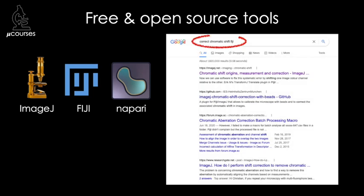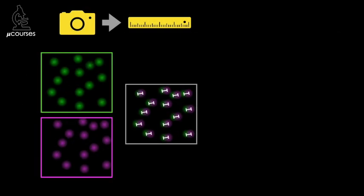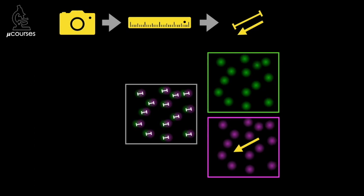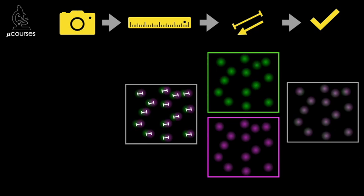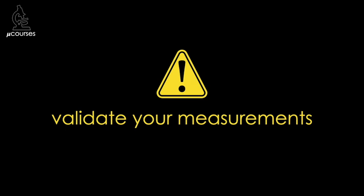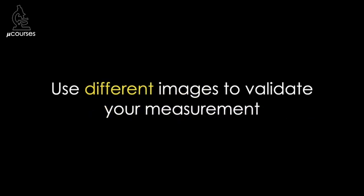Instructions on how to use these software are easy to find online, and if you have questions, you can ask the image analysis experts on the image.sc discussion forum. To register the images, you'll transform one relative to the other, which can also be done in the open source software packages previously mentioned. These software offer multiple options for performing this correction, and the best option depends on the extent of the misregistration between your images. Applying the correction to the same images you used to measure it is pretty likely to work, but there are a lot of things that can go wrong, so you must validate your measurements on a different set of images than the ones you used to measure the shift.